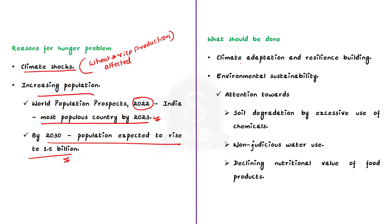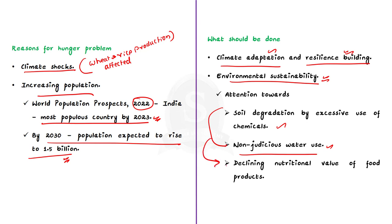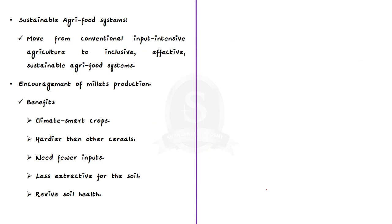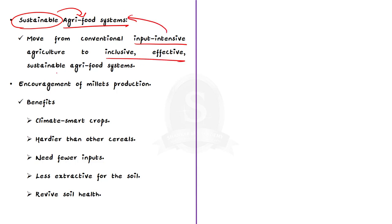Since climate shocks are a key reason for hunger in India, it is important to place greater focus on climate adaptation and resilience building in agriculture. Nutrition and agricultural production are not only impacted by climate change but are also linked to environmental sustainability. Soil degradation through excessive use of chemicals and non-judicious use of water has reduced the nutritional value of food products and needs urgent government attention. To address the demand-supply mismatch from population growth, agri-food systems must provide sustainable support, moving away from conventional input-intensive agriculture towards more inclusive, effective, and sustainable agri-food systems.